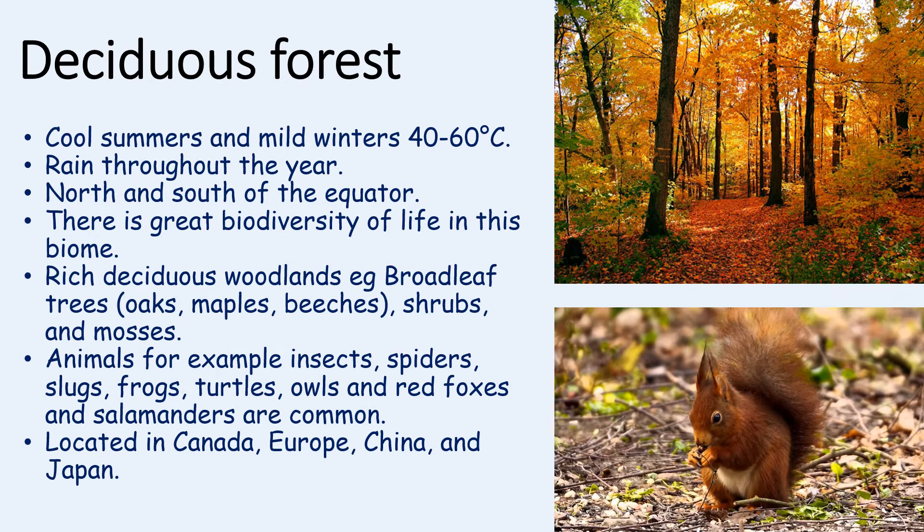Moving on to the deciduous forest. The climate of the deciduous forest is cool in the summer and has mild winters, with a temperature usually around 40 to 60 degrees Celsius. There is rain throughout the year and there is a great biodiversity of life in this biome, including rich deciduous woodlands — for example broad-leaf trees, oaks, maples, beeches, shrubs and mosses. The leaves of deciduous trees change colour and fall off in the autumn and grow back in the spring.